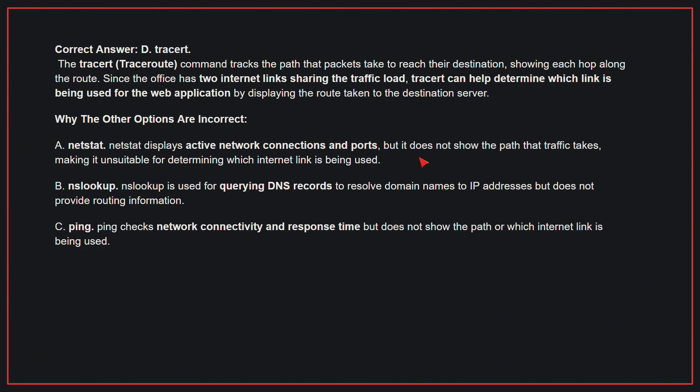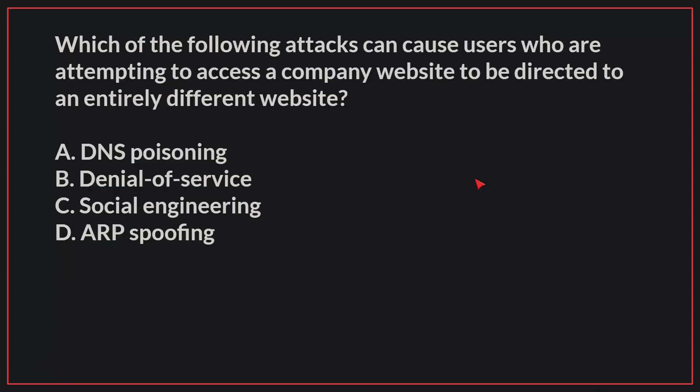Why the other options are incorrect: A, NetStat, displays active network connections and ports, but does not show the path that traffic takes, making it unsuitable for determining which internet link is being used. B, NSLOOKUP, is used for querying DNS records to resolve domain names to IP addresses, but does not provide routing information. C, Ping, checks network connectivity and response time, but does not show the path or which internet link is being used. Therefore, the correct answer is D, TraceRT.